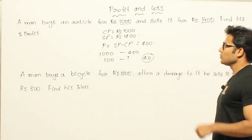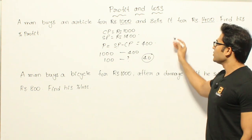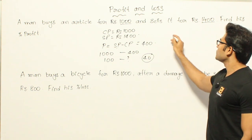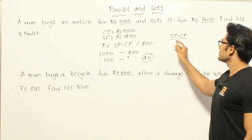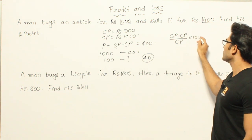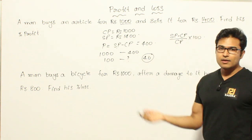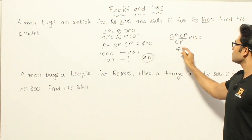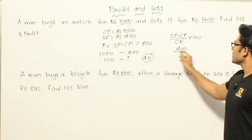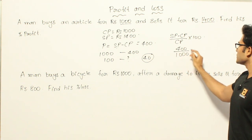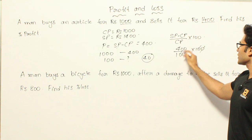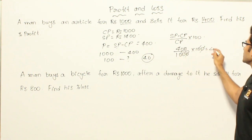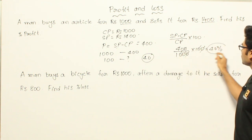Or if you want to check it by formula, you can apply this formula. Selling price minus cost price divided by cost price into 100. Selling price minus cost price is 400, divided by cost price 1000, into 100. That gives 40 percent.